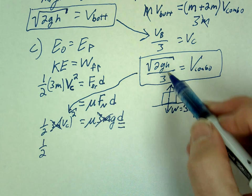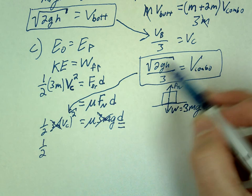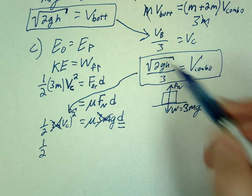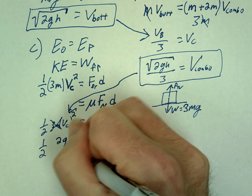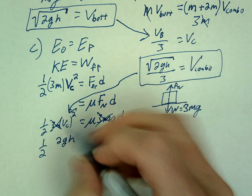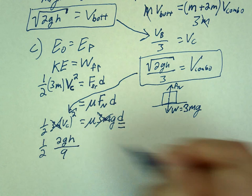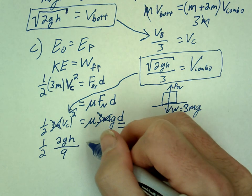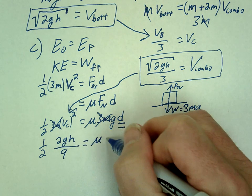So what happens when we square a square root? We cancel. We're just left with 2gh. And what happens when we square a 3? We're left with 9. Equals mu g d. Well, that's nice. There goes g. G cancels. There goes our 2. That cancels.